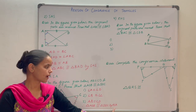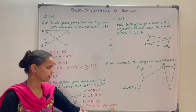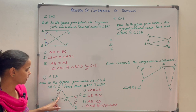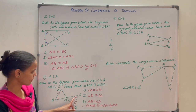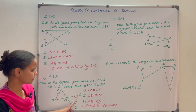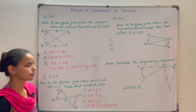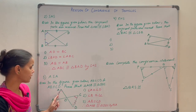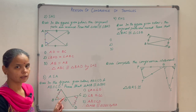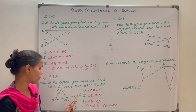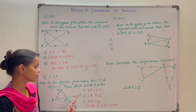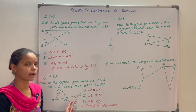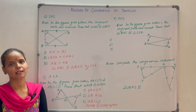ASA means Angle, Side, Angle — the side is included between the two angles. If under correspondence, two angles and the side included between them of one triangle are equal to the corresponding two angles and the included side of another triangle, then the two triangles are said to be congruent by ASA congruency criteria.